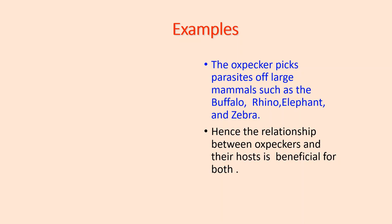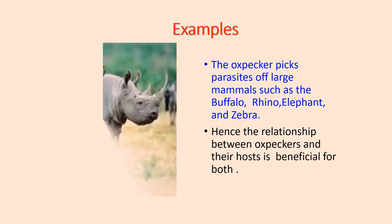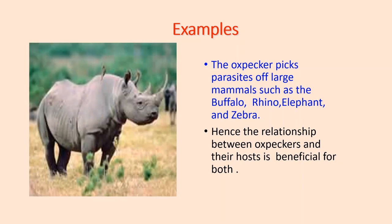There are many examples of such relationships. One is the tick bird and rhinoceros association. The oxpecker picks parasites off large mammals such as buffalo, rhinoceros, elephant, and zebra. The bird gets food while the rhinoceros is relieved of its sanguivorous ectoparasites like lice, ticks, and mites. The bird also warns the larger partner of any approaching danger.